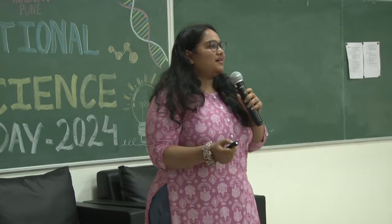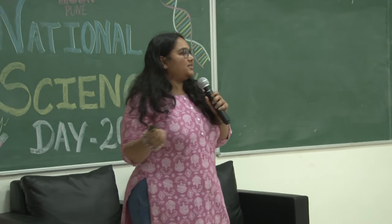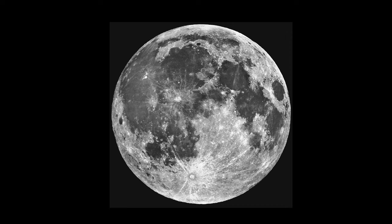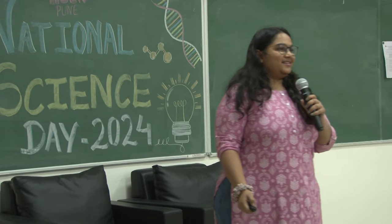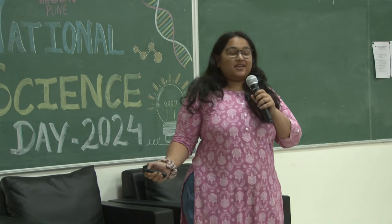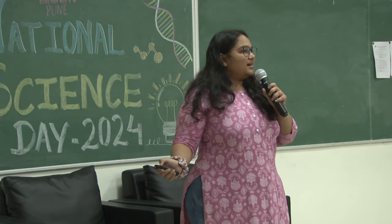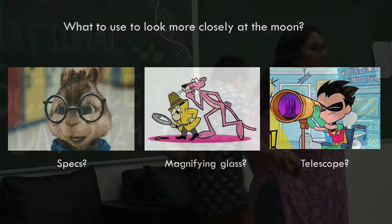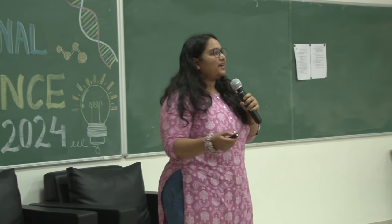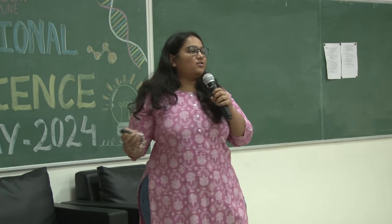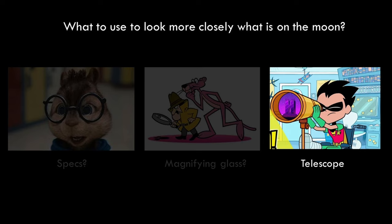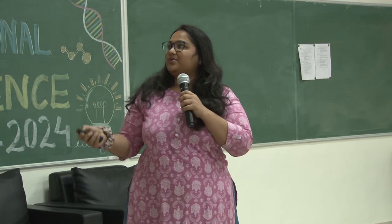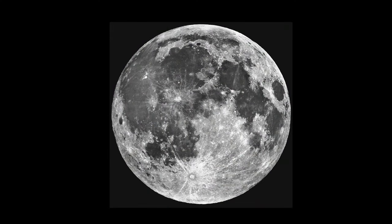When you look at the moon you just see it as a white celestial object — you don't see much detail about what is on the moon. So if you want to have a close look at the moon, what would you use? Even though you have specs or a magnifying glass or a telescope, you use these to magnify and see things. In this case, to look more closely at the moon, you use the telescope.